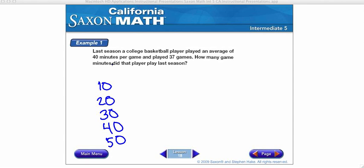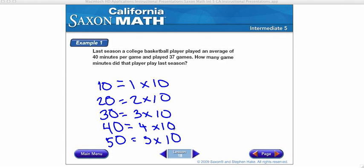These are all multiples of 10 because I can multiply each one by 10, 10 is a factor. 1 times 10, 2 times 10, 3 times 10, 4 times 10, 5 times 10. So 10, 20, 30, 40, 50 are multiples of 10 because 10 is a factor.